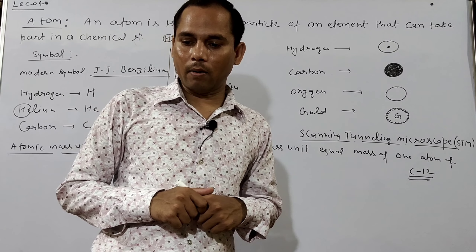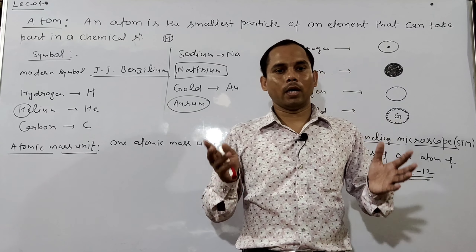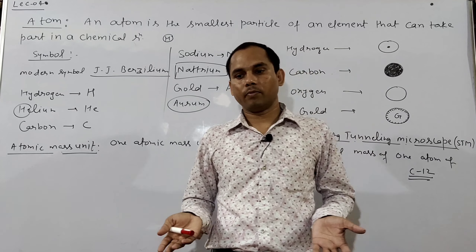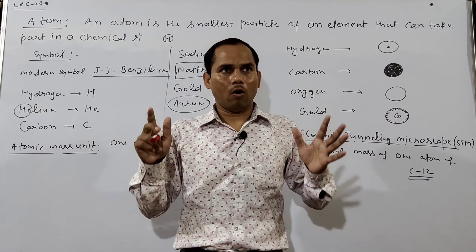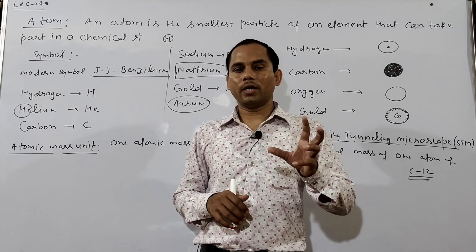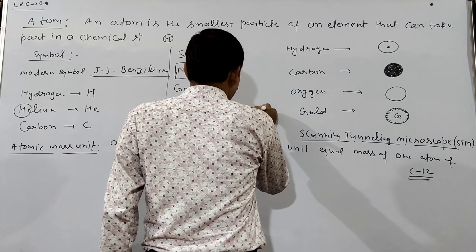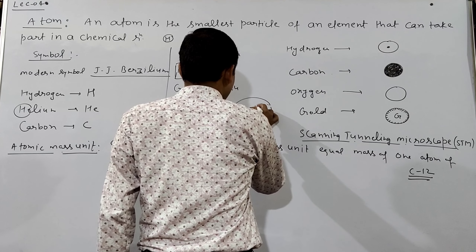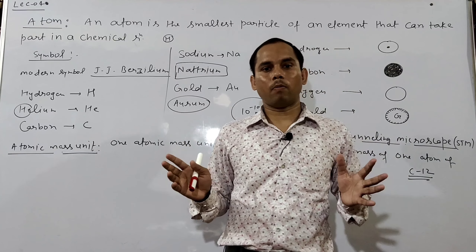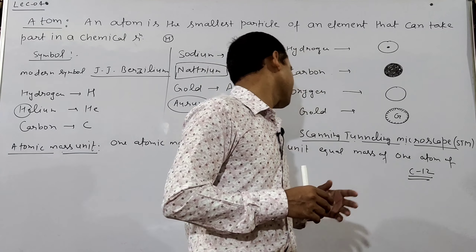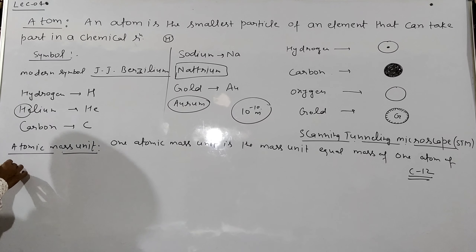Why is it not possible to see an atom with the naked eye? Because atoms are very small particles. The atomic radius is 10 to the power of minus 10 meters — very small. So we can see atoms only with the help of the Scanning Tunneling Microscope (STM).